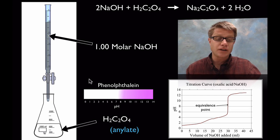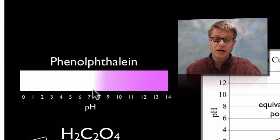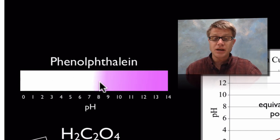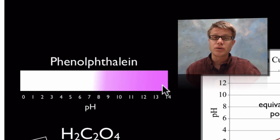When you're doing a titration you have to have some kind of an indicator. In an acid-base titration, what we'll use is phenolphthalein. Phenolphthalein is a chemical that when the pH is low — when it's acidic — it's going to be totally clear. But as the pH goes above around 8, it's going to turn to a pink color. So it's really an indicator of when we're going to get a big change in pH.